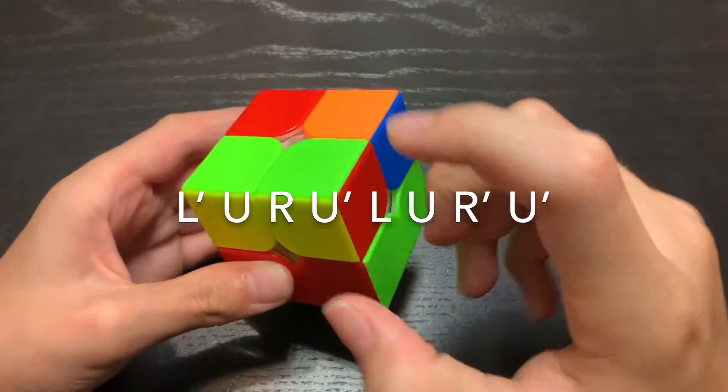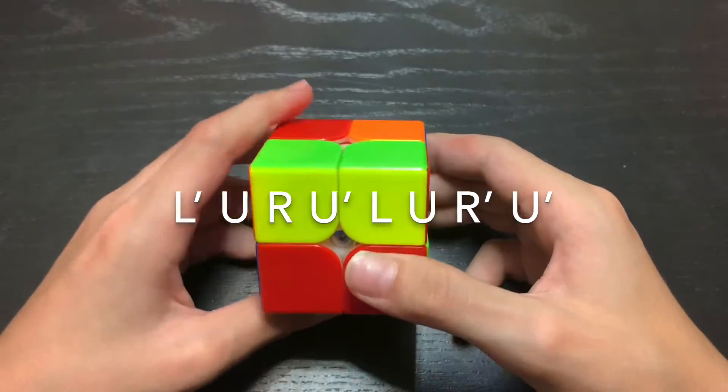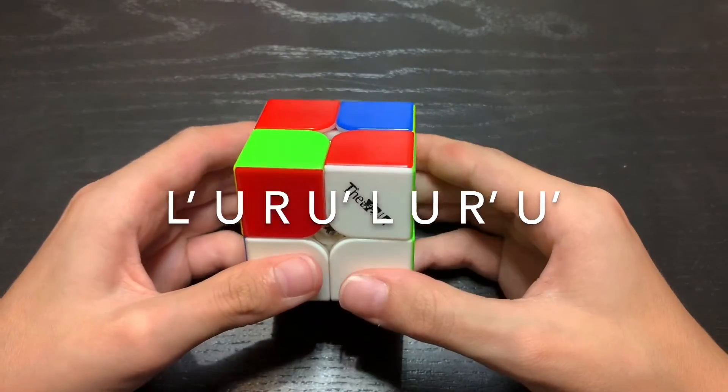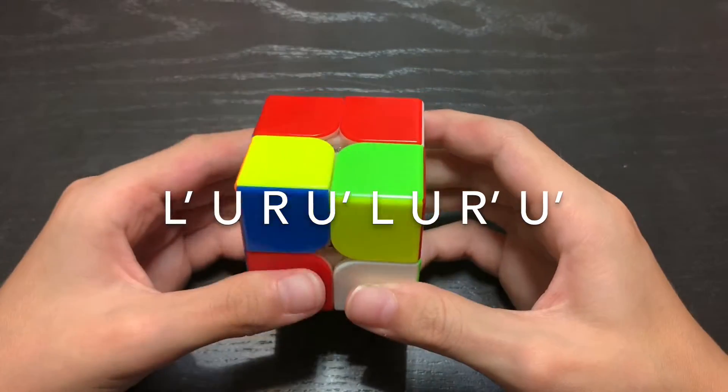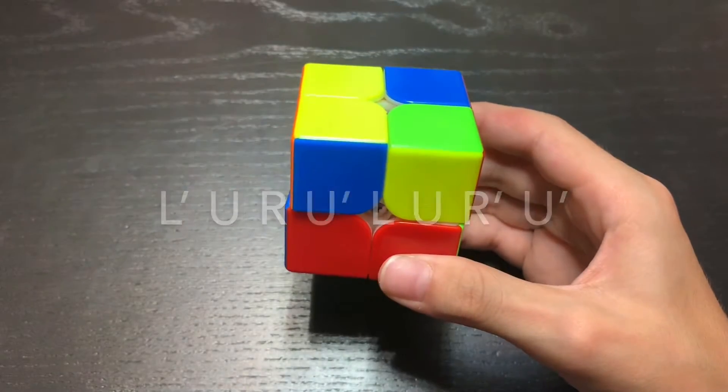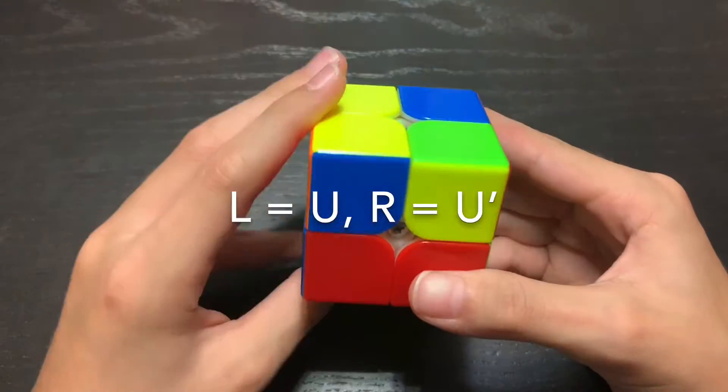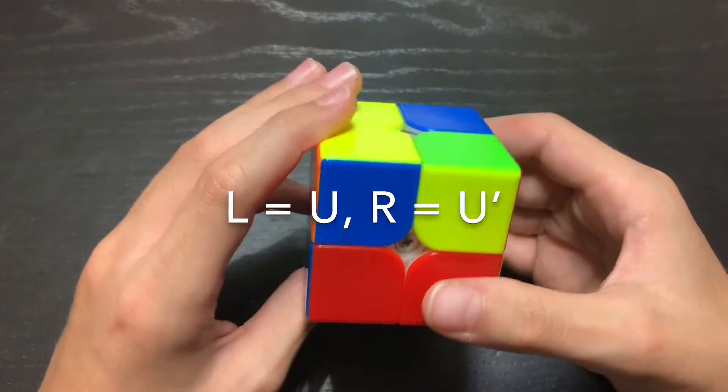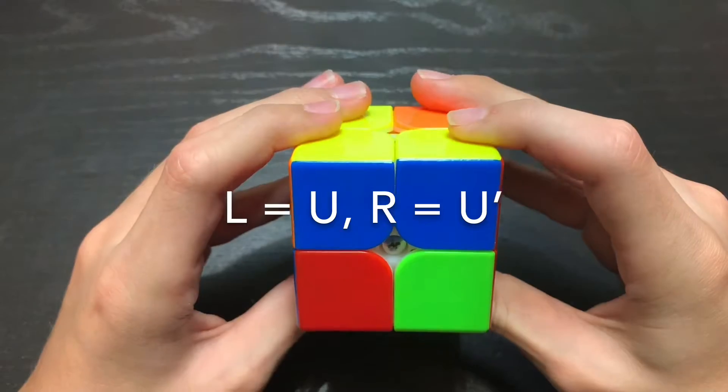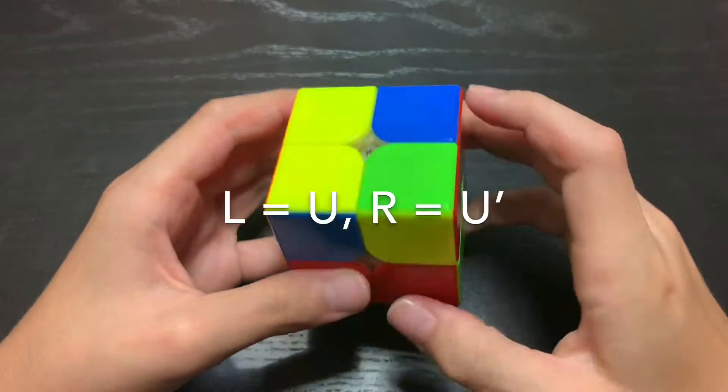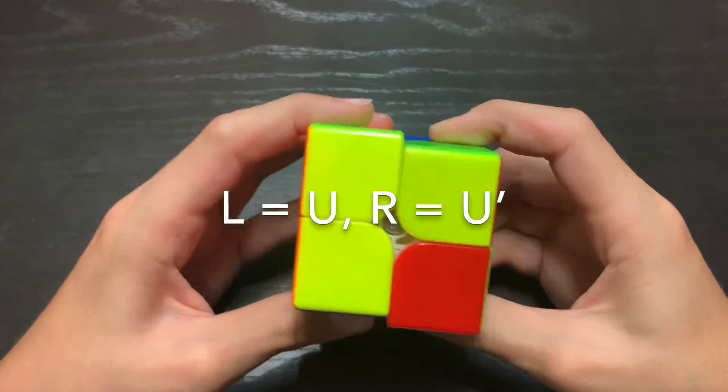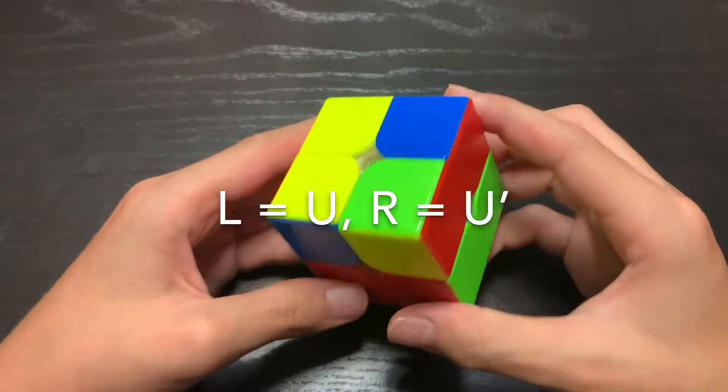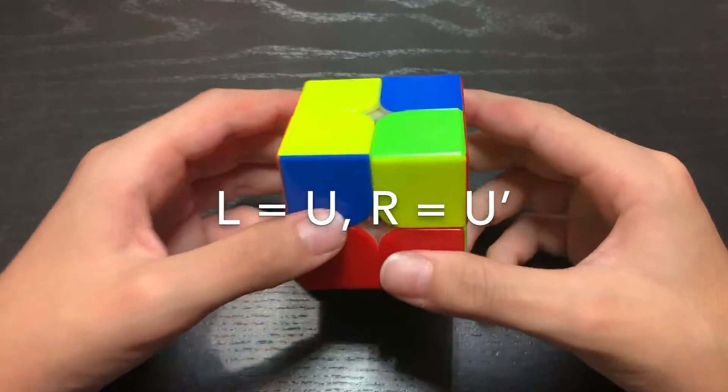So once you've found one piece that is correct, you do this simple algorithm. L prime, U, R, U prime, L, U, R prime, U prime. Basically, whenever you turn the left side, either up or down, you always turn the top clockwise. Whenever you turn the right side, you always turn the top counterclockwise. So this algorithm is a little bit easier to remember because of that cool pattern.